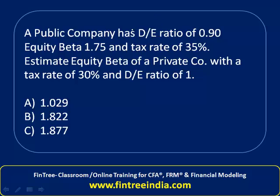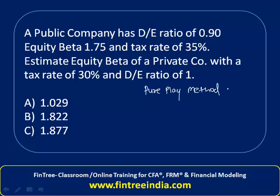A public company has a debt-equity ratio of 0.90, a beta of 1.75, and a tax rate of 35%. We have been asked to estimate the equity beta of a private company with a tax rate of 30% and a debt-equity ratio of 1. This means we are expected to apply the pure play method for beta calculation.